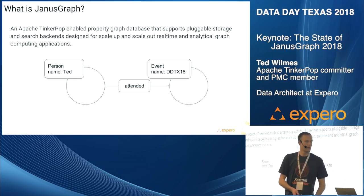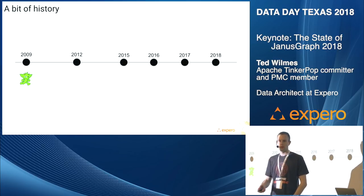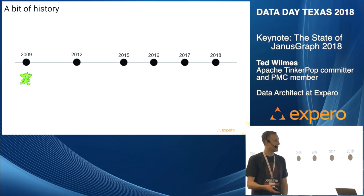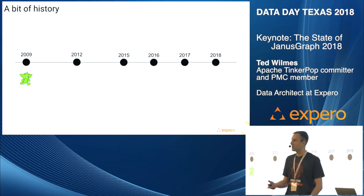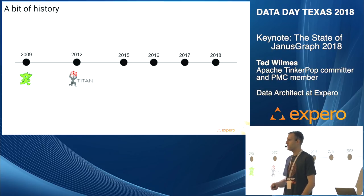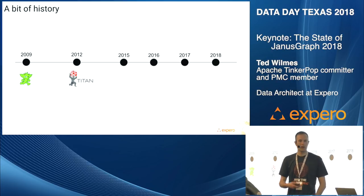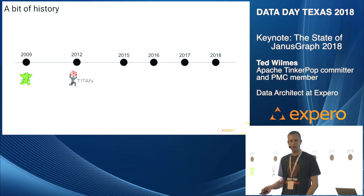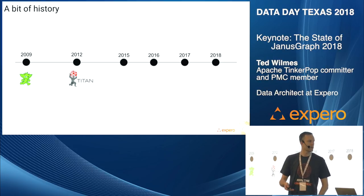JanusGraph in particular supports pluggable storage backends and has tight integration with TinkerPop. A little bit of history about where Janus came from: around 2009, the TinkerPop project started — a graph computing framework you could use for transactional or analytical processing over graph systems. A big part of that was a new graph query language called Gremlin. In 2012, the first version of a graph database by the name of Titan was released. This was an open source graph database, and Titan became pretty popular.